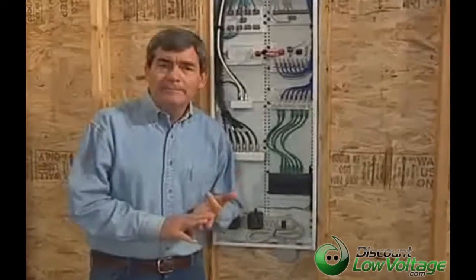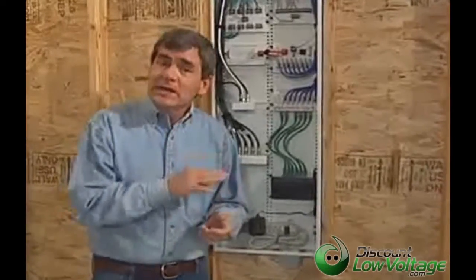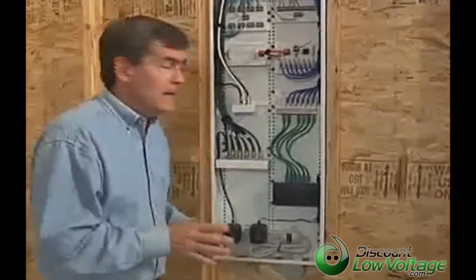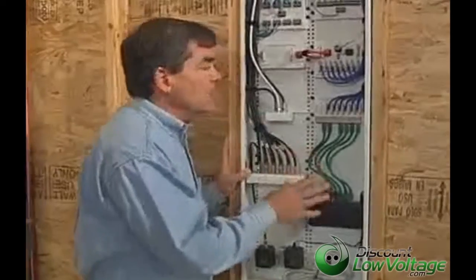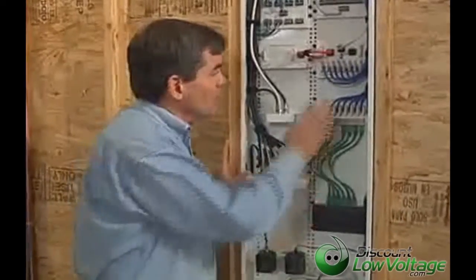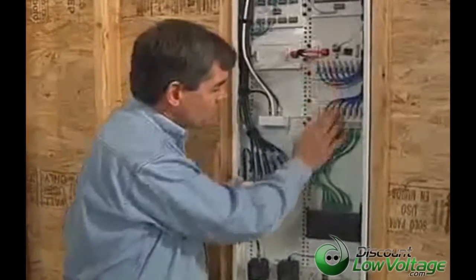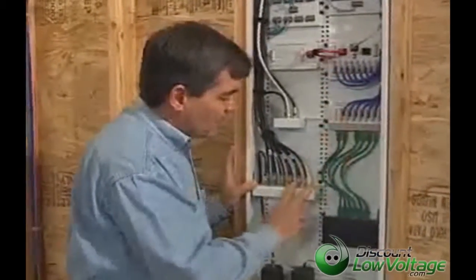cable, broadband internet, any satellite or off-air antenna — tie into this distribution center, allowing you or the homeowner to select what service is available at what outlet.